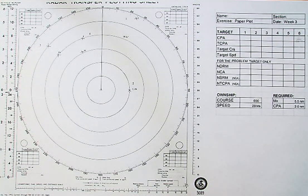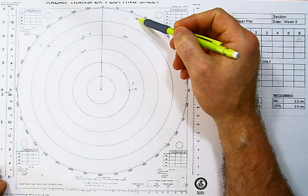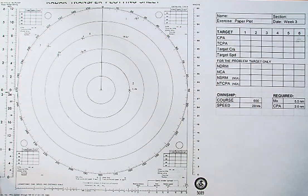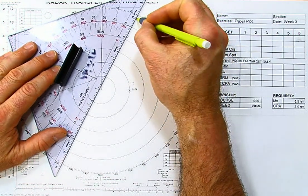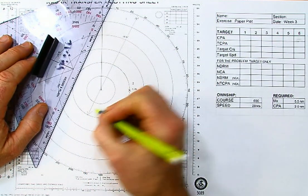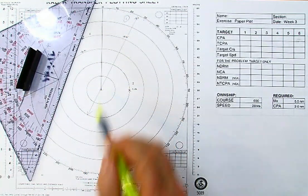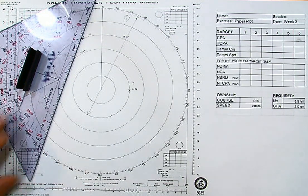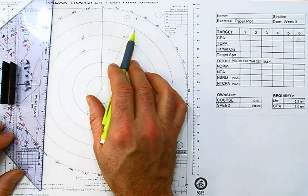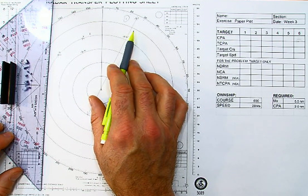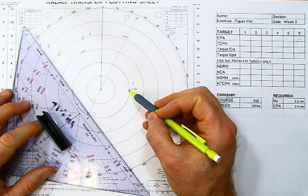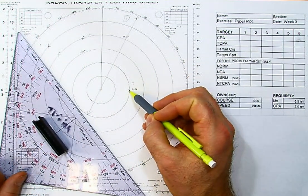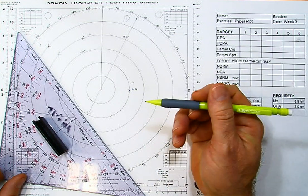We've got our targets here, R and M. I'm going to connect R and M to get my relative motion line. I can see right off the bat that target one has got a CPA of zero or near zero, and that vessel is on our starboard bow, so I'm going to have to do something to open that CPA up. Over here, this is no relative motion — that vessel is the same course and speed, I don't even need to think about it.